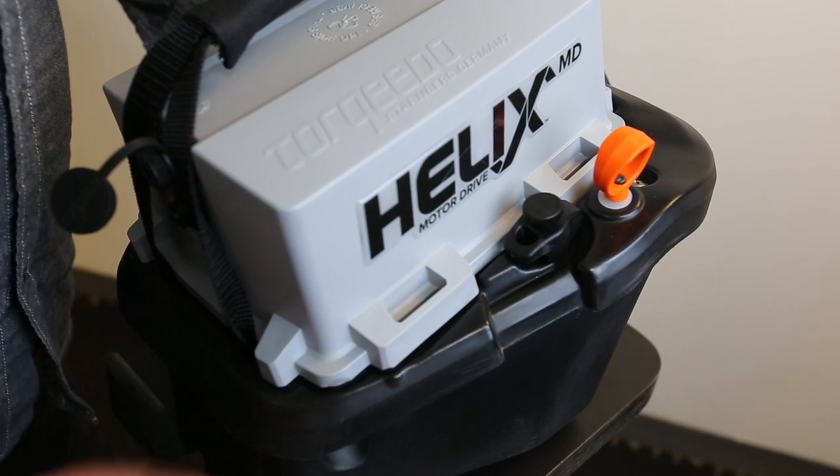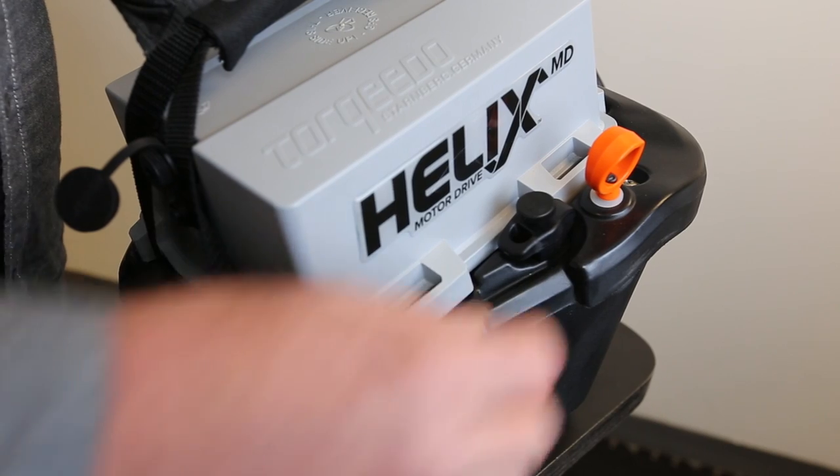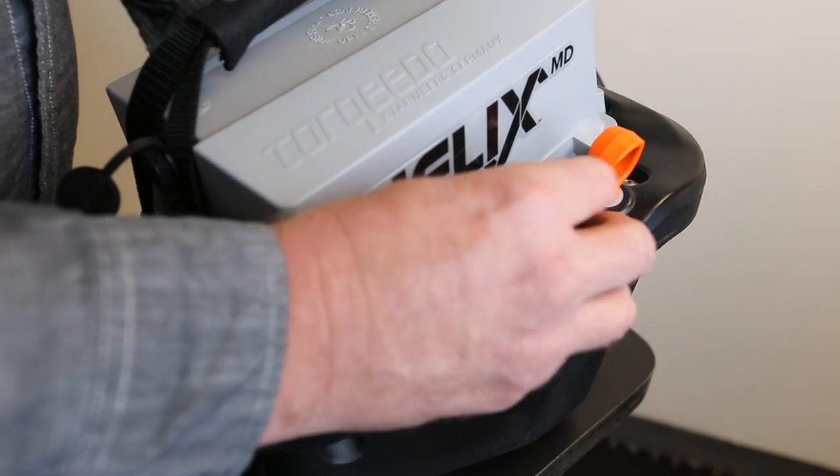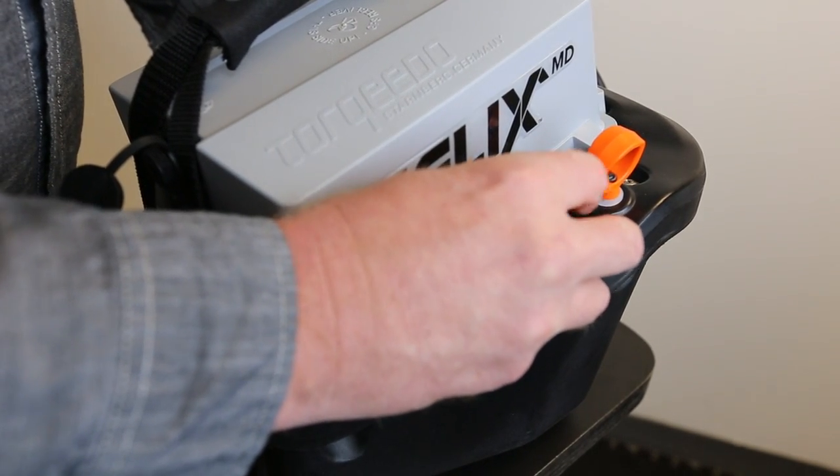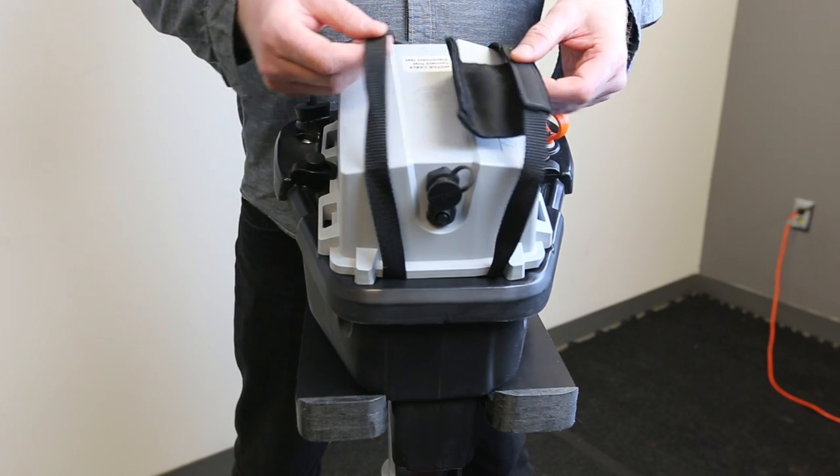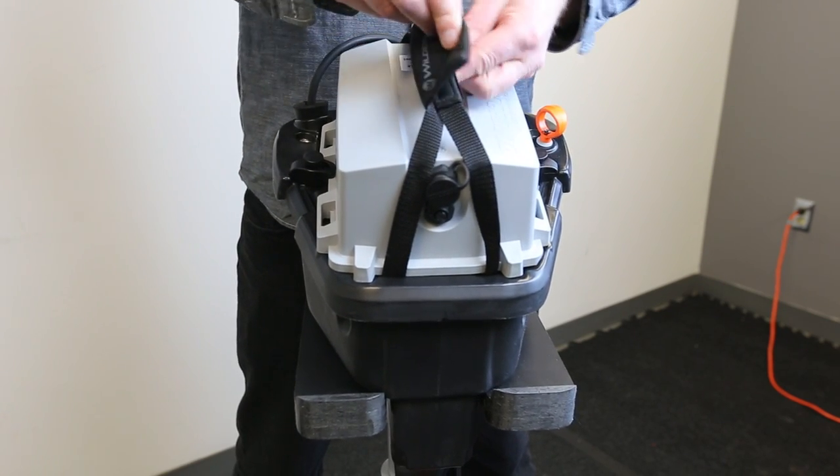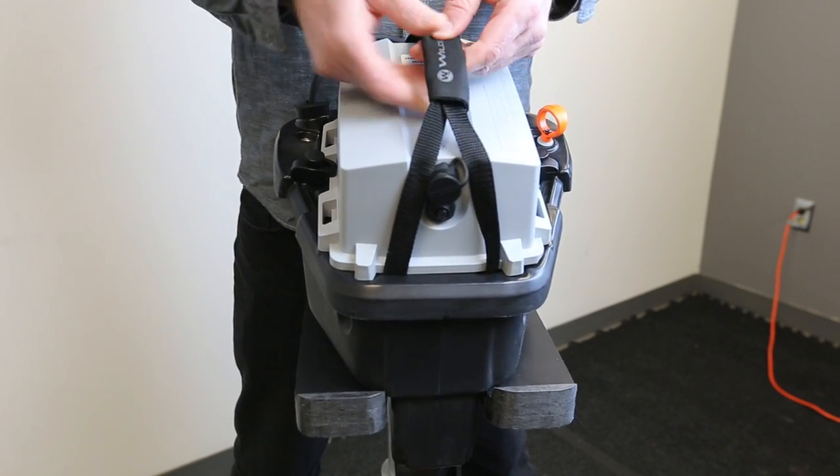Once the battery is seated, turn the hold down levers 90 degrees and tighten down with the round thumb knobs to secure the battery in place. Then Velcro the carry handle straps together over the top of the Motor Drive battery.